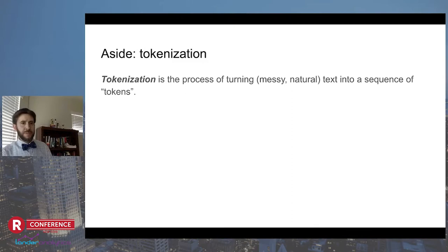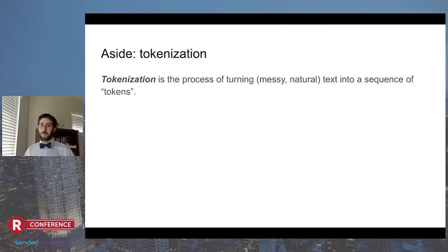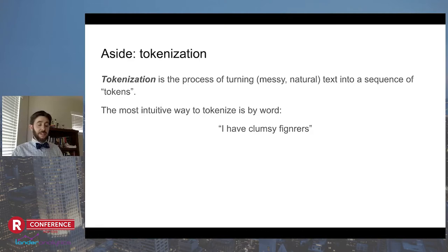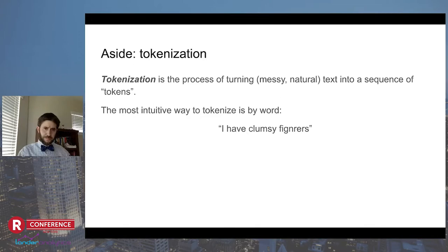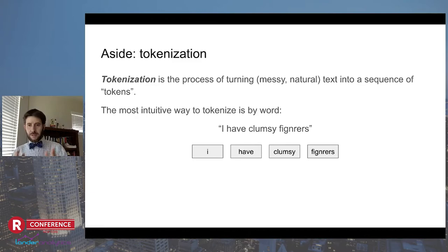Briefly, tokenization in natural language processing is taking the input text — and we're generally dealing with text in this context — and turning it into a sequence of definite pieces, which we'll call tokens. The most obvious way to tokenize text, at least in English, is to divide it into words. For example, suppose I have the text 'I have clumsy fingers,' where I intentionally put a typo in that last word. If I break this into words, it would be: I, have, clumsy, fingers. Most of the models we're dealing with have a specific set of recognized tokens — like a token vocabulary.